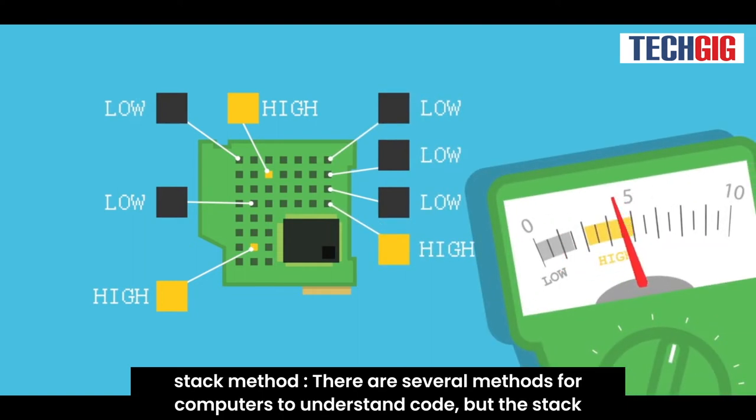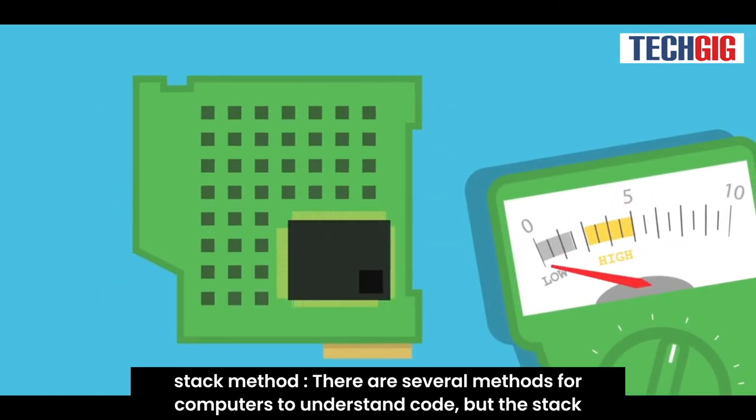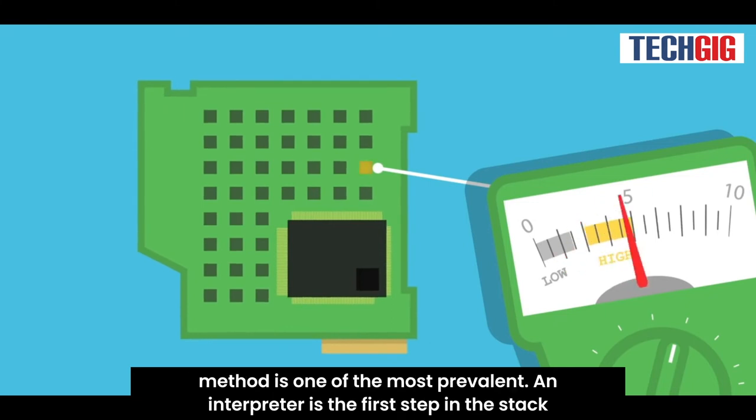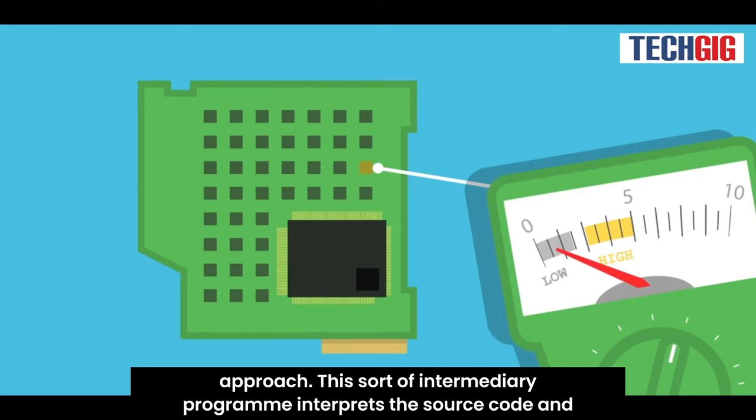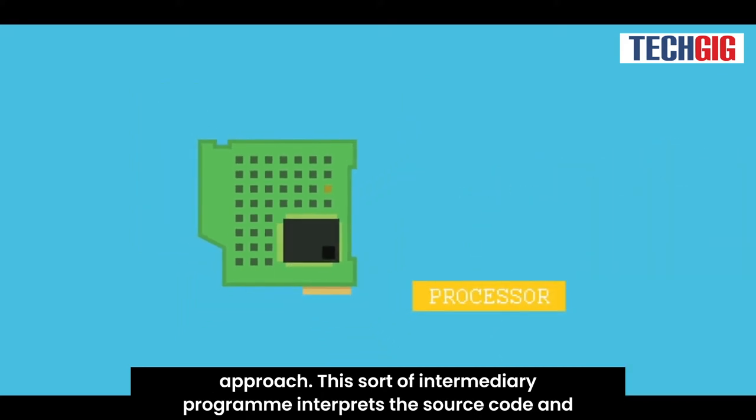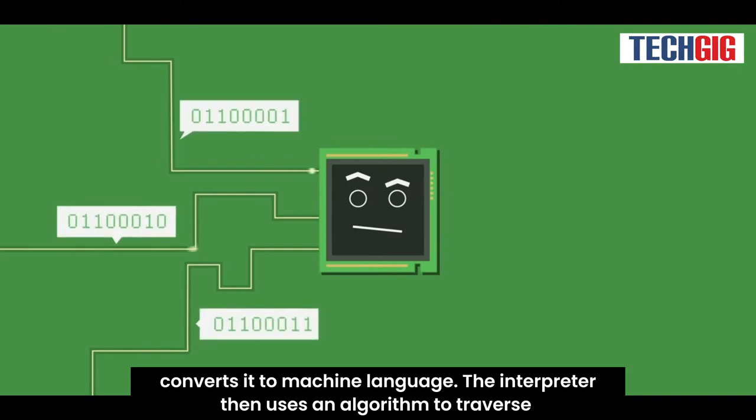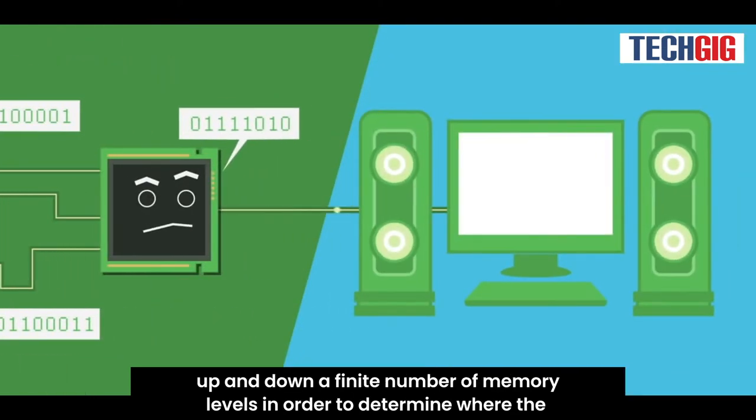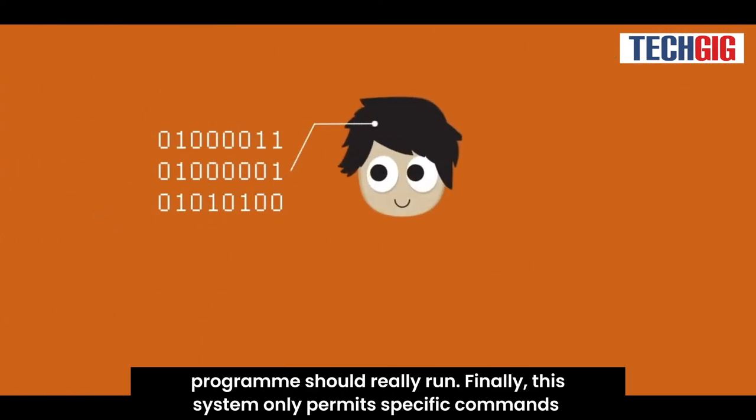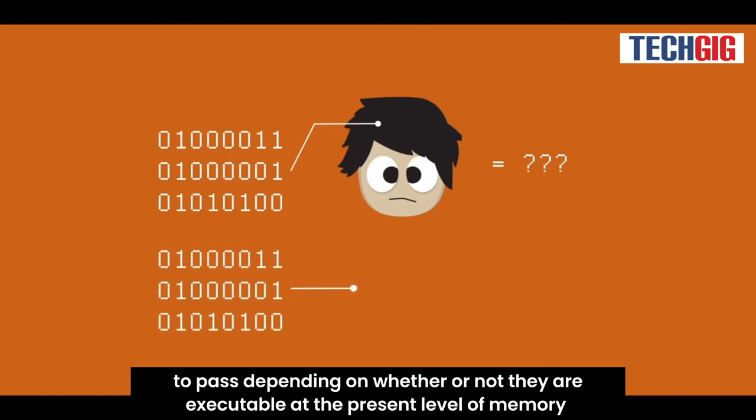Stack method theory are several methods for computers to understand code, but the stack method is one of the most prevalent. An interpreter is the first step in the stack approach. This sort of intermediary program interprets the source code and converts it to machine language. The interpreter then uses an algorithm to traverse up and down a finite number of memory levels, in order to determine where the program should really run. Finally, this system only permits specific commands to pass depending on whether or not they are executable at the present level of memory.